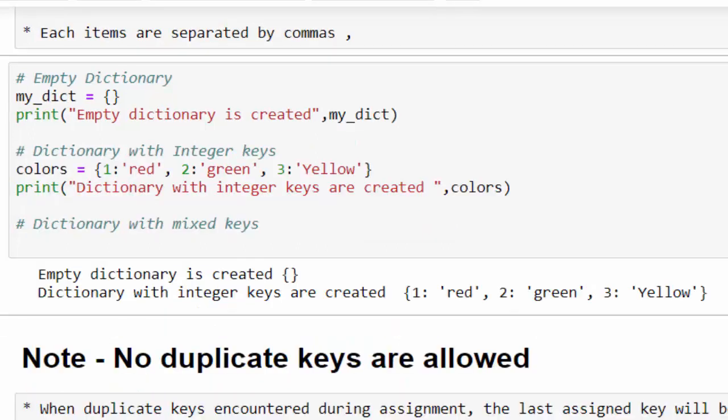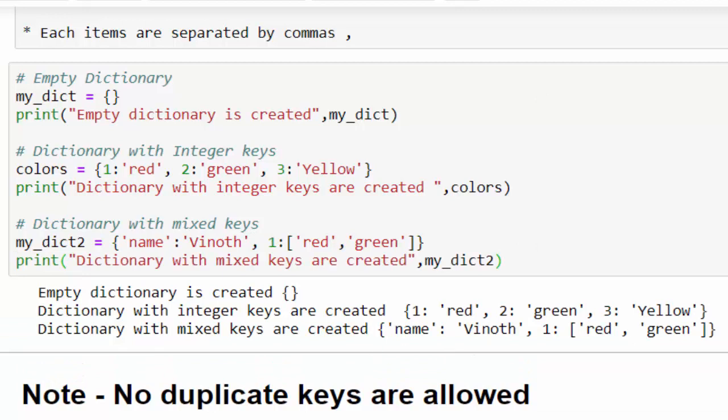The next example is dictionary with mixed keys. Mixed keys means it can be integer, string, tuples—any combination. The variable name my dictionary 2 equals within curly braces key name and its value Vinoth. This is a string, then 1 is another key. I'm giving value within the list red comma green. We created a dictionary with mixed keys which consists of integer, string, and a list. Printing it, we got the correct output.